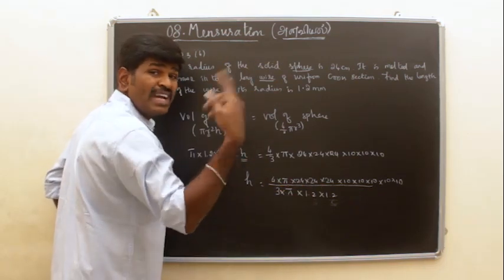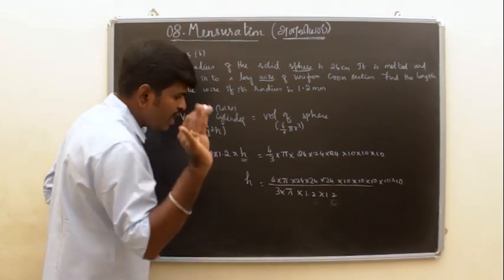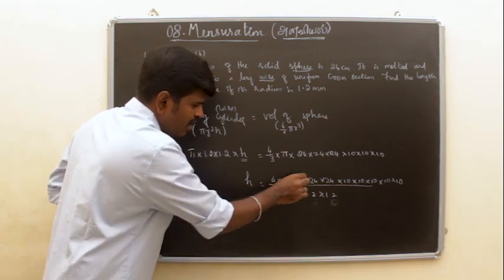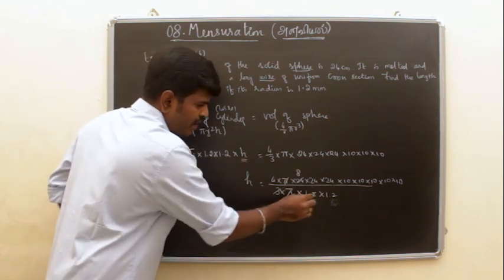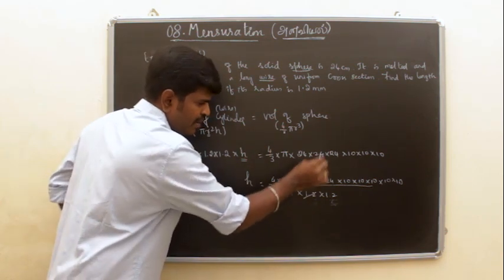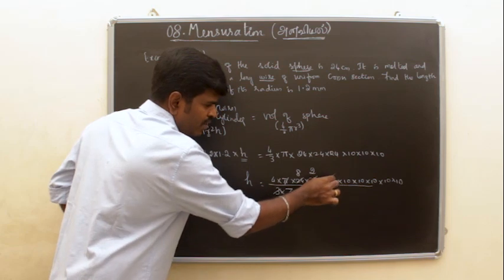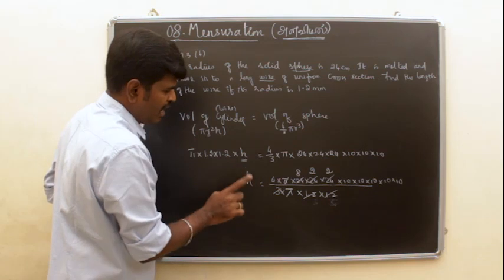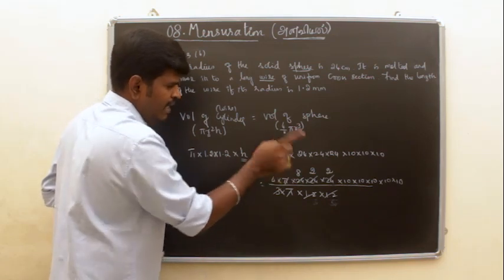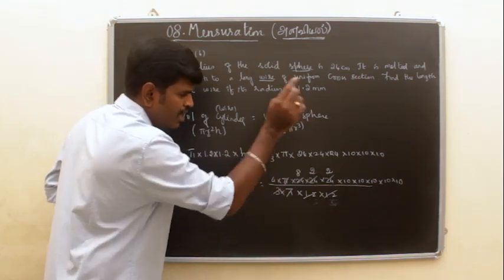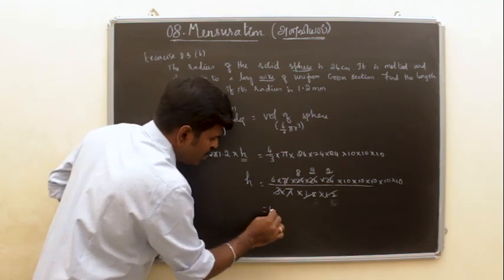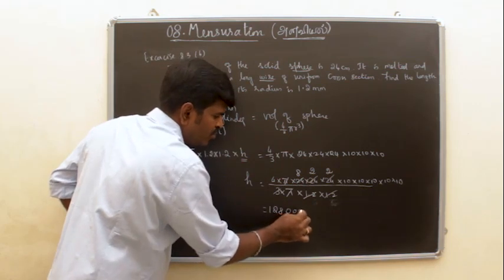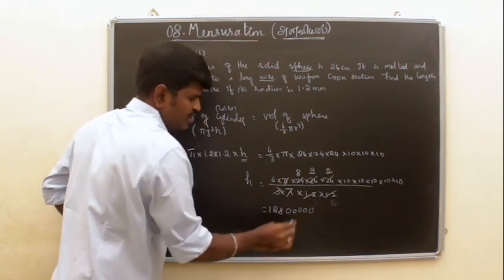1.2 becomes 12, we cancel 3. Cancel 12 and 24. Cancel 4, 2, getting 8 times 8 equals 64, then 2 times 64 equals 128. So we get 1, 2, 8, 0, 0 - that's 12,800.